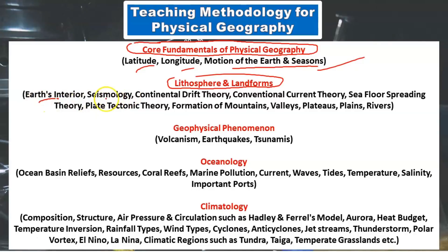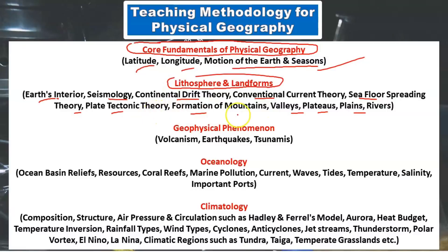We will cover the various theories based on which people believe how the continents and oceans have been formed — the continental drift theory, conventional current theory, sea floor spreading theory, and plate tectonics. Based on these theories, we will understand how mountains are formed, valleys, plateaus, plains, and rivers.